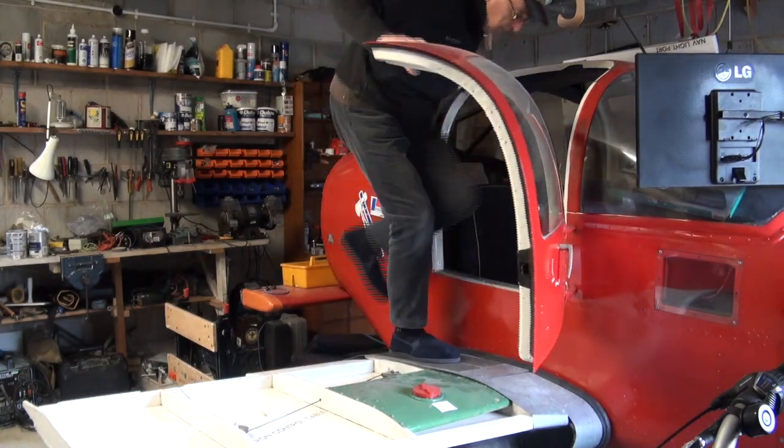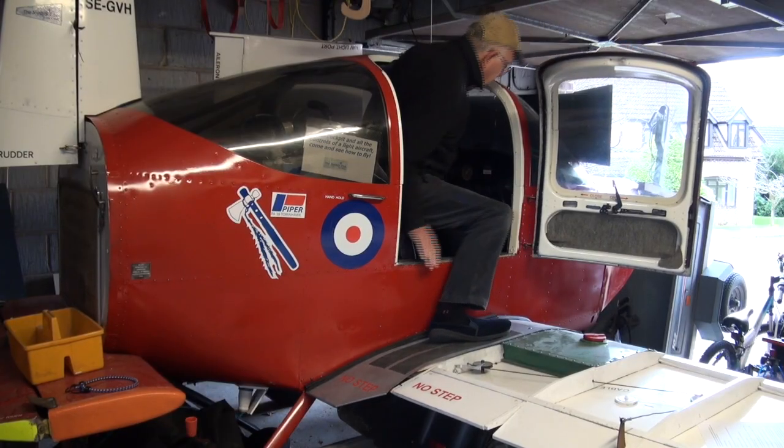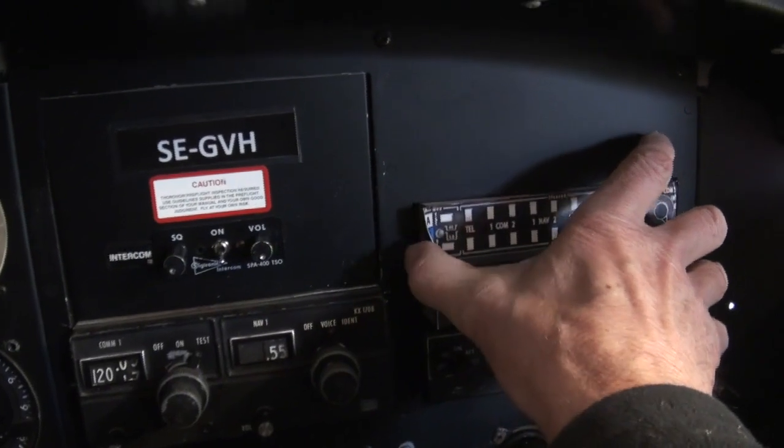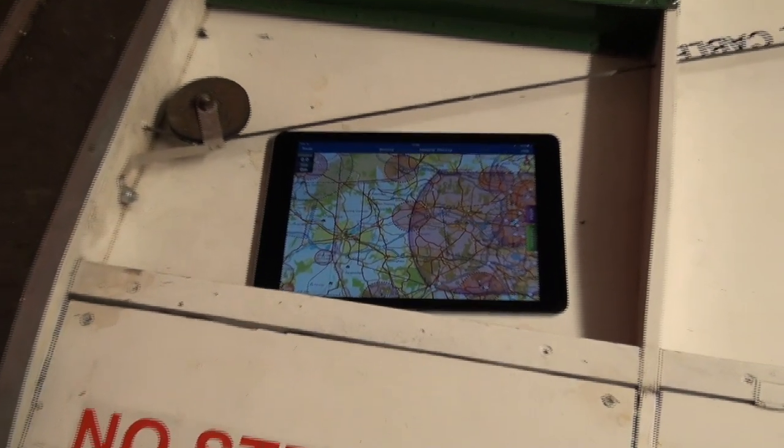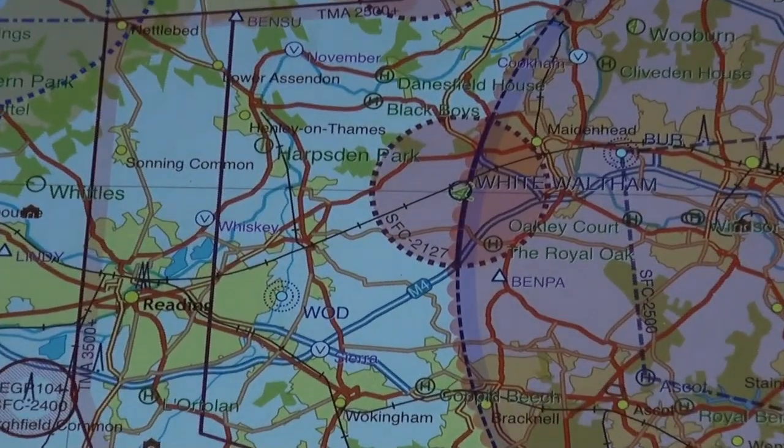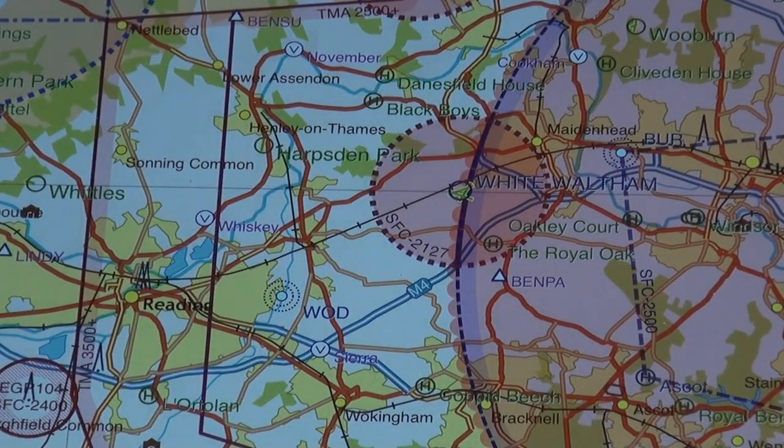The electronics to drive the instrument servos will be mounted in the COM2 tray. There's currently a Wi-Fi router in there used to communicate X-Plane to Sky Demon on an iPad. The router will be moved to the parcel shelf.